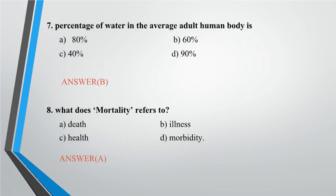Question 7: Percentage of water in the average adult human body is? A. 80%, B. 60%, C. 40%, D. 90%. Answer: B.